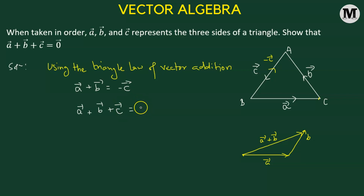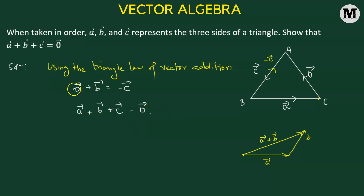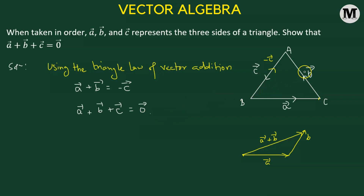This leaves us with zero — but not a scalar zero. It must be the zero vector, because the sum of three vectors must give us a vector. We have successfully shown that the sum of vectors a, b, and c equals the zero vector when a, b, and c represent the three sides of a triangle taken in order.